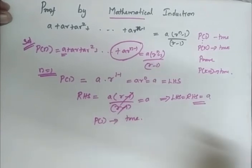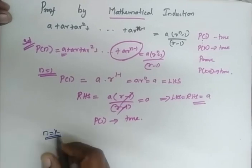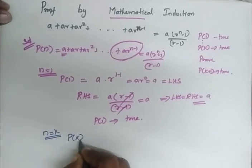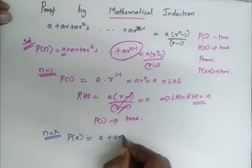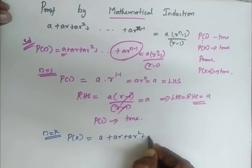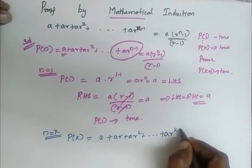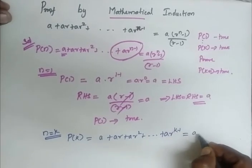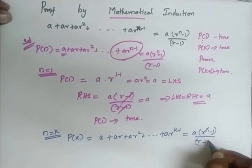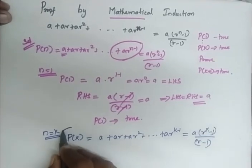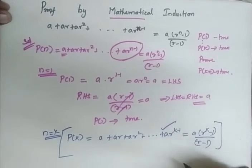Since my P of 1 is true, I assume that my P of K is true, where my n is equal to K. So my P of K is: a plus a r plus a r squared, etc., plus a r power k minus 1, is equal to a into r power k minus 1, divided by r minus 1. Remember this — we will be using it for further proof.